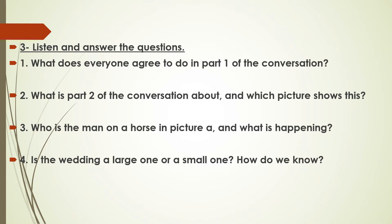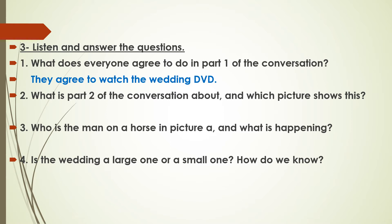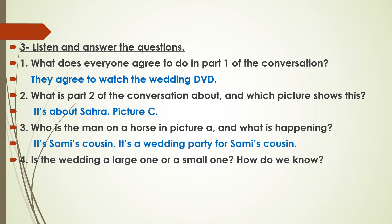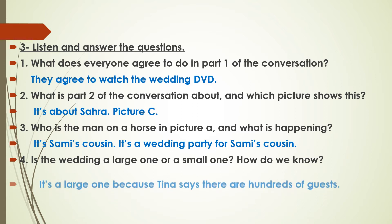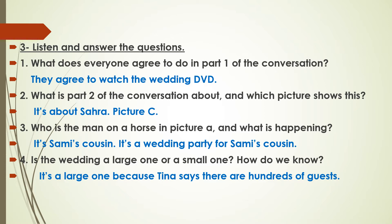Now after listening to the conversation, let's answer the questions in exercise 3. Number one: what does everyone agree to do in part one of the conversation? They agreed to watch the wedding DVD. Number two: what is part two of the conversation about, and which picture shows this? It's about Sahra — picture C. Number three: who is the man on a horse in picture A? It's Sammy's cousin. Number four: is the wedding a large one or a small one? It's a large one, because Tina says there are hundreds of guests.